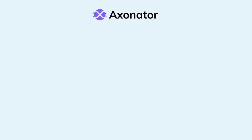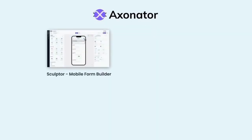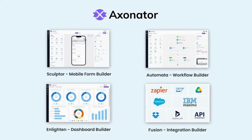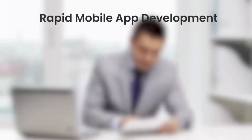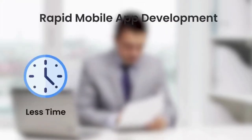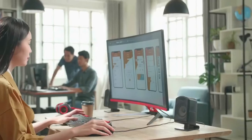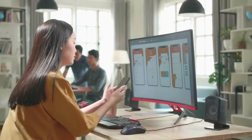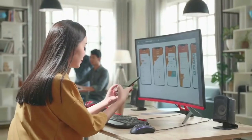AXONATOR's core is built on four components: Sculptor, Automata, Enlighten, and Fusion, which are powerful enough to automate every business process you throw at it. AXONATOR's four components serve one purpose — to enable rapid mobile app development that fits your unique needs with less time, effort, and cost. The best part is that there is no need to write a single line of code to harness its full potential.